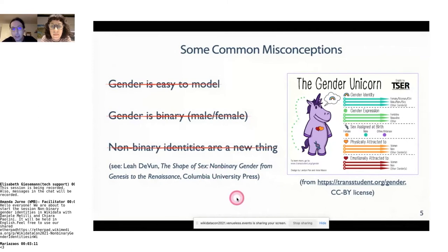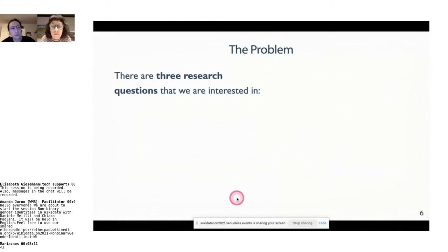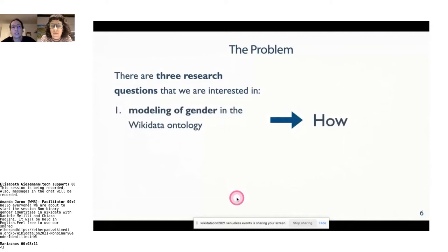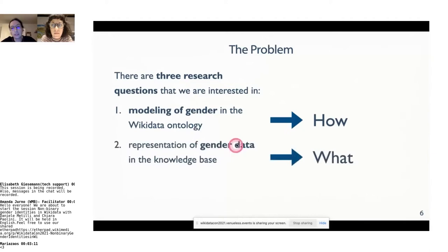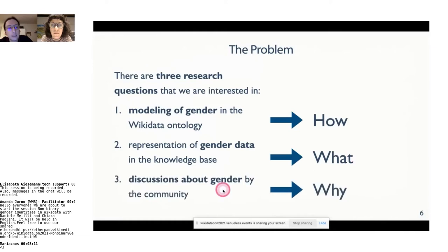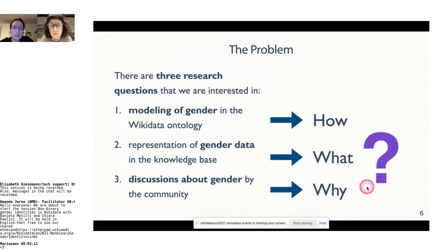There are three research questions we have considered in this study, which is ongoing, so we don't have all results yet. The first is the modeling of gender — how gender is modelled in Wikidata and in its ontology. Then there is the data itself: what is represented and who is represented. And then there is the discussion about gender by the community, which tells us why certain modeling choices have been taken and why some data have been represented in a certain way.